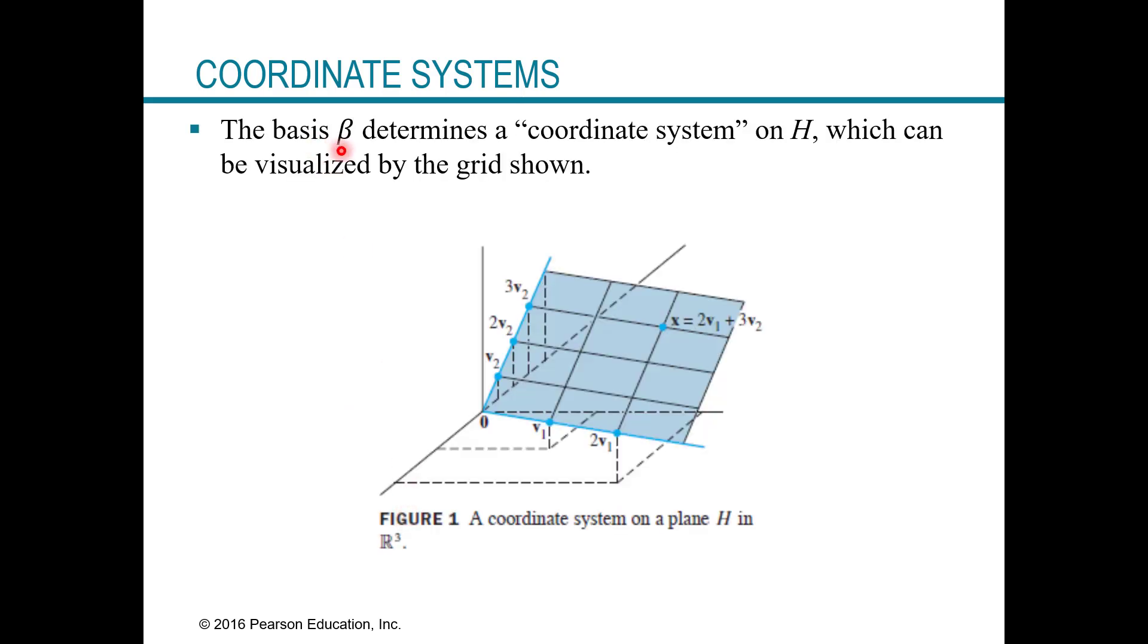Alright, so here's a visual for you. The basis determines a coordinate system on H, which can be visualized here. So basically, what you're doing is you're saying, how can I locate x using the vectors in the basis, in the set? How can I locate x using v1 and v2? And so we set up this coordinate system. In this case, it's a plane, the plane H. And notice here's x, we figure out the weights was two for c1 and three for c2. And so using the vector, say this is vector v1 and the vector v2, we can locate x in space on this grid. So two v1 plus three v2 gets us right here to x. So that's what we're doing here with this coordinate system.